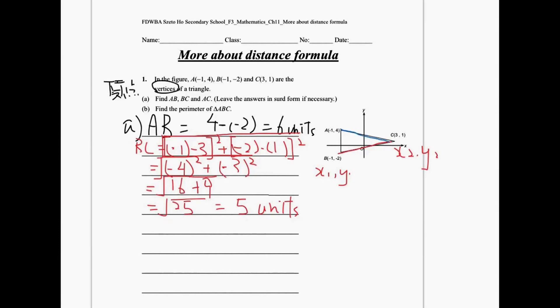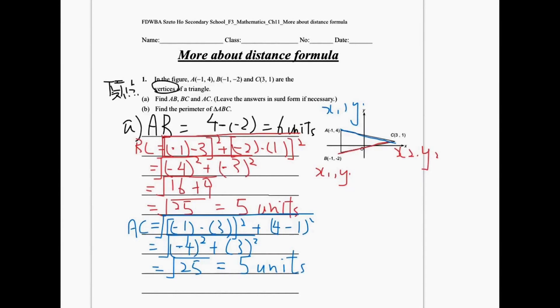By using the same skills, we can also find AC. Let's say point A is x₁, y₁, and point C is still x₂, y₂. So by using the distance formula again, negative 1 minus 3 all square plus 4 minus 1 all square. So by using the distance formula, we can easily find the length of AB, BC, and also AC.